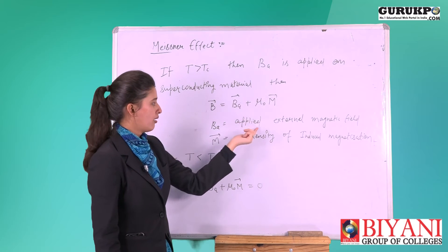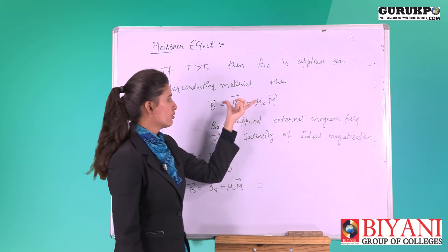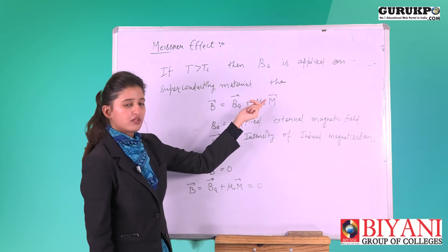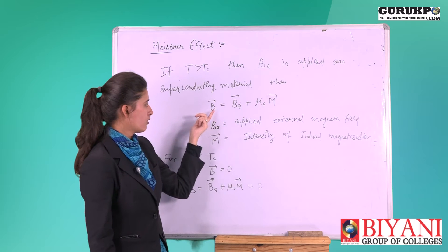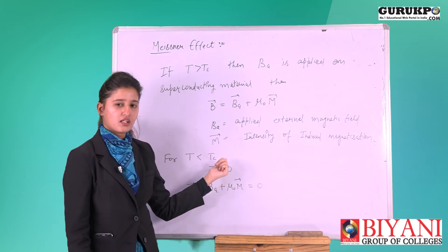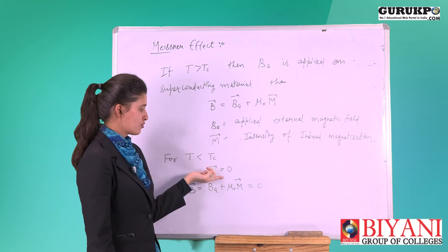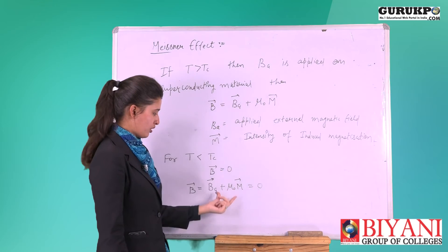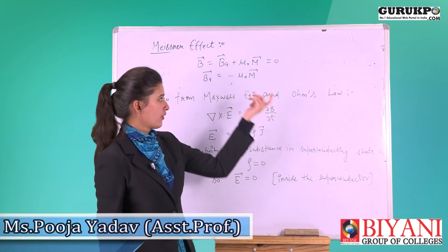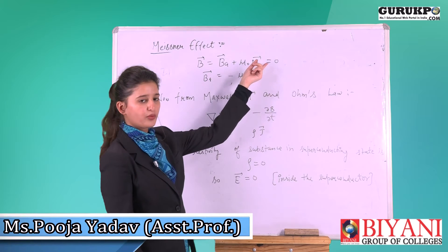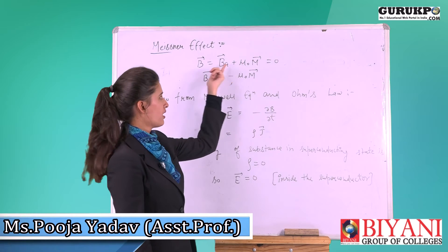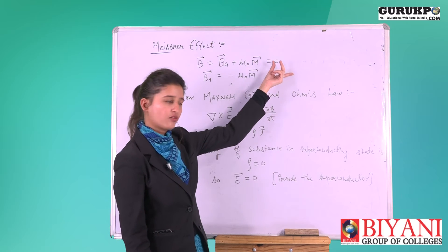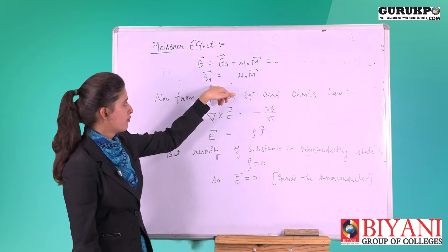So our condition will be: B equals B_a plus μ₀M. We know that when temperature is less than the critical temperature, B is equal to zero. So B_a plus μ₀M will be equal to zero. Here B_a is the external applied magnetic field and M is the intensity of magnetization. From this equation, B_a equals minus μ₀M.